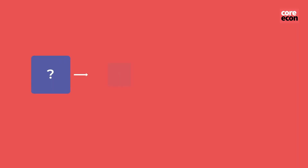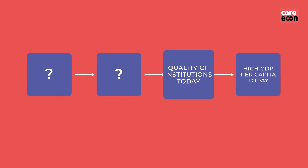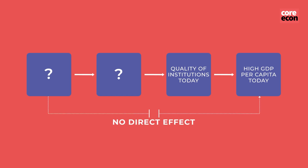So the logic of what we did was to look for a variable that determined institutions — the right-hand side variable in the regression — and the variable that we thought would affect GDP per capita. We wanted something that would affect institutions today but not affect GDP per capita today, because otherwise how do you know it's the institutions effect? So it has to be something that works only through institutions.